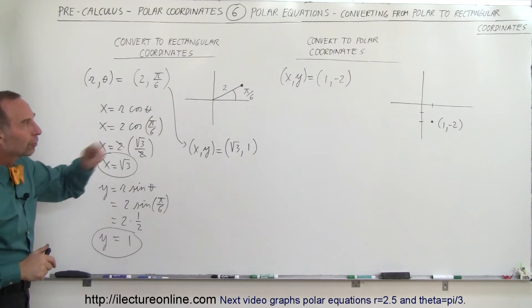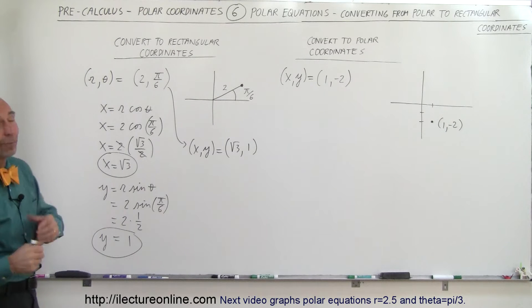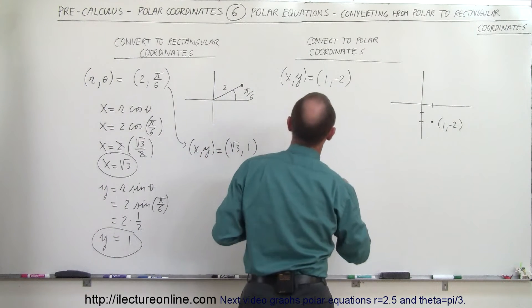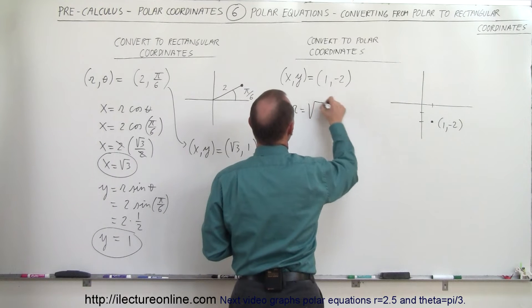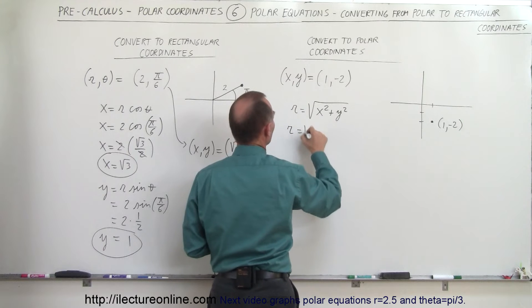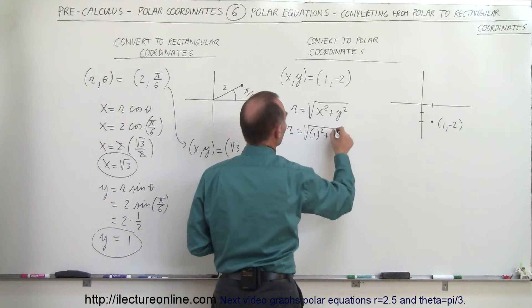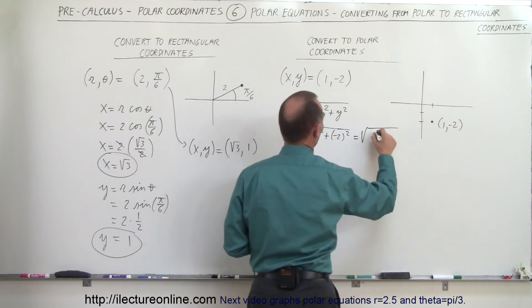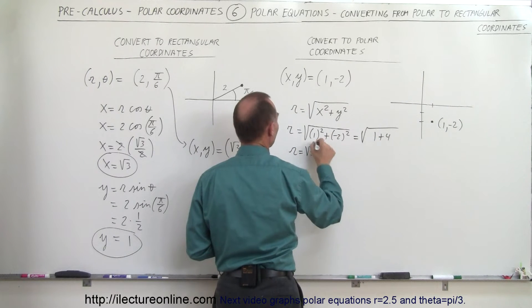Now, how do we convert from rectangular to polar coordinates? That may be a little more difficult. We know that R equals the square root of X squared plus Y squared. So R equals the square root of 1 squared plus negative 2 squared, which is the square root of 1 plus 4. Therefore R equals the square root of 5.